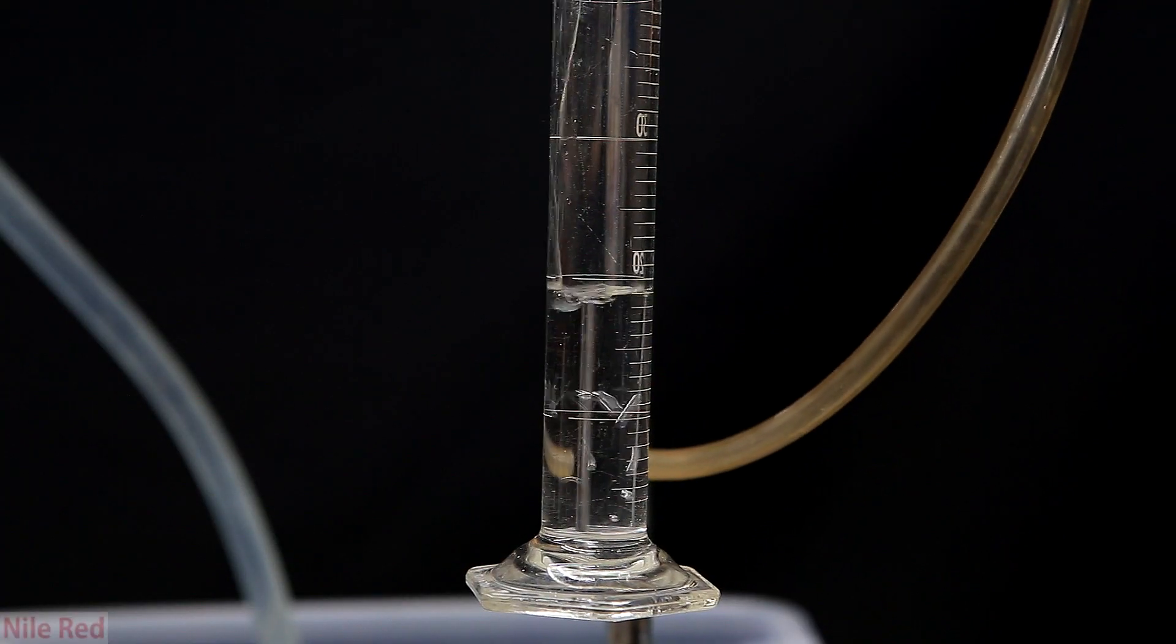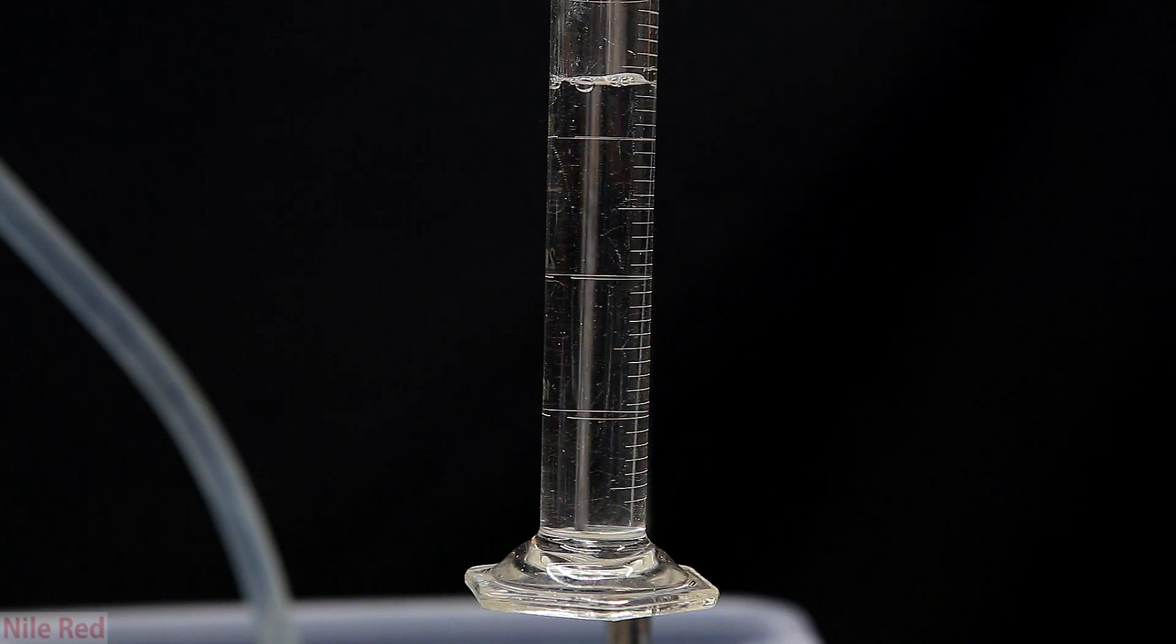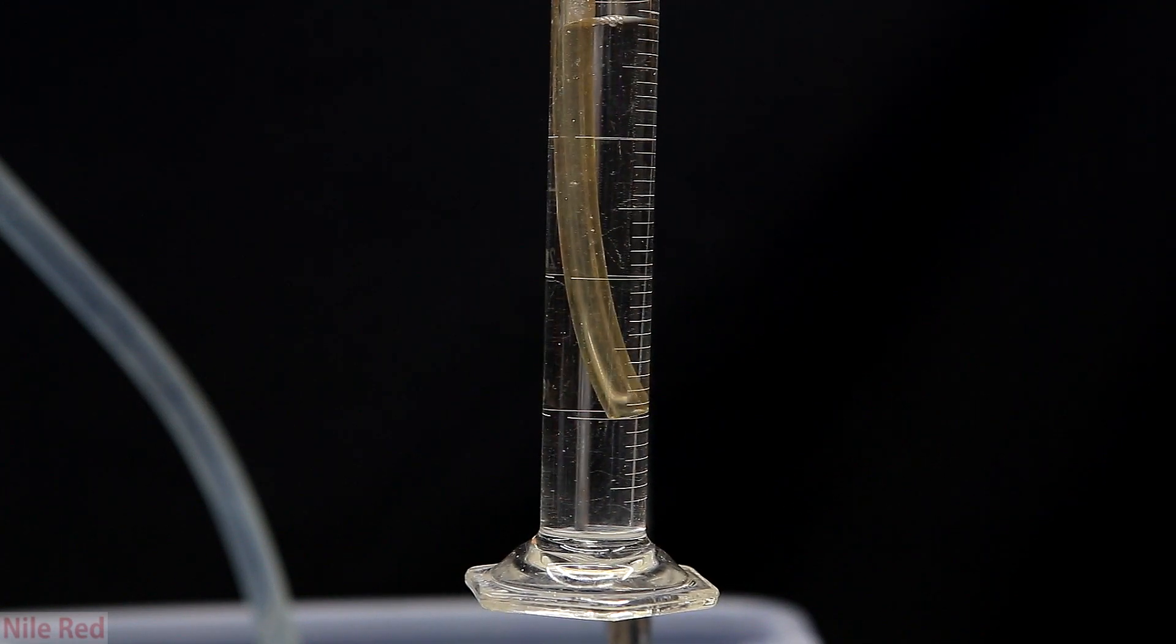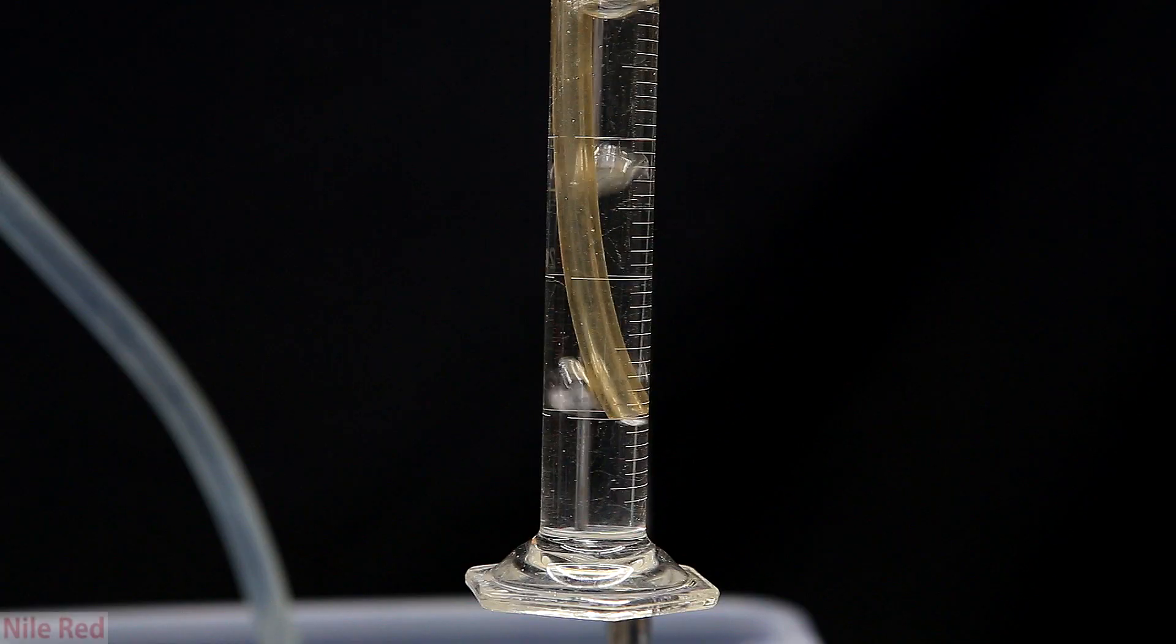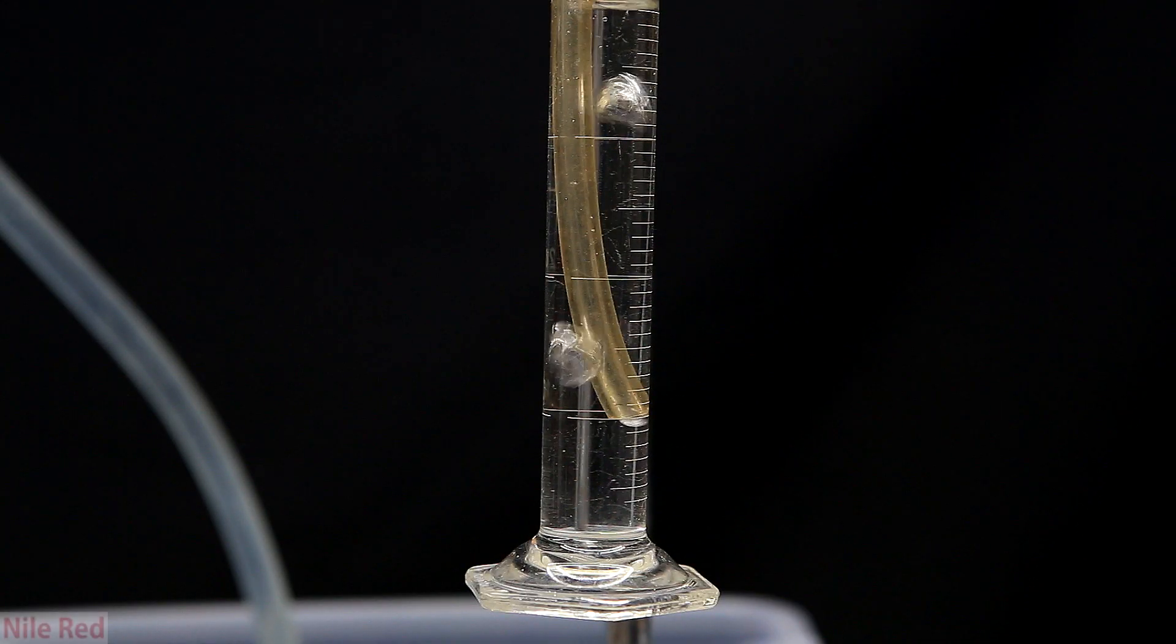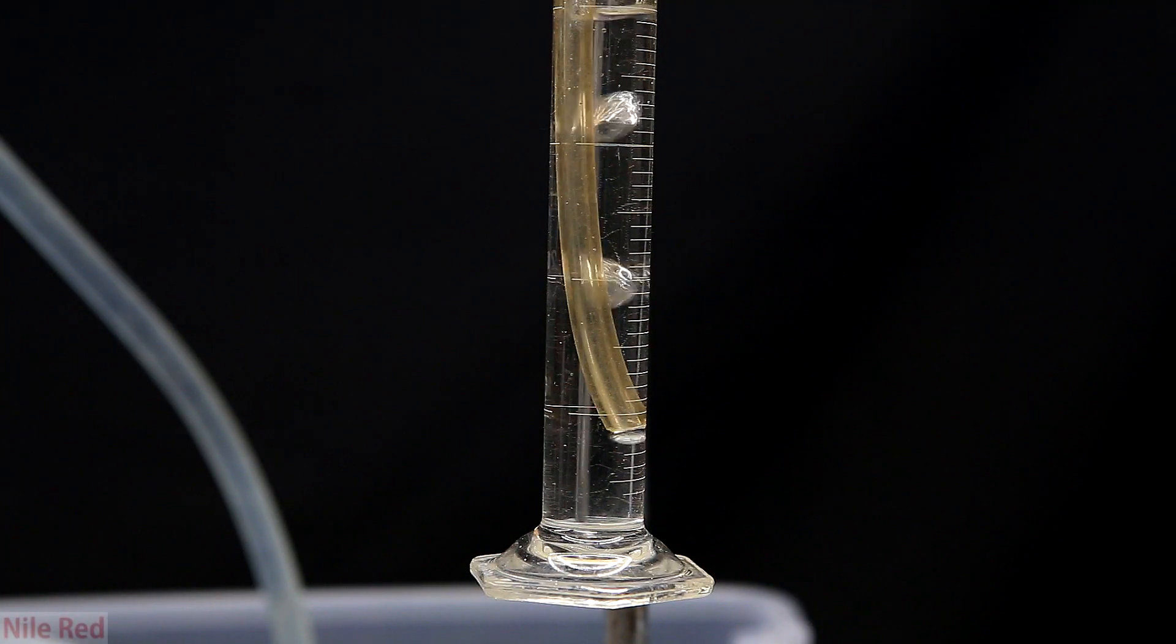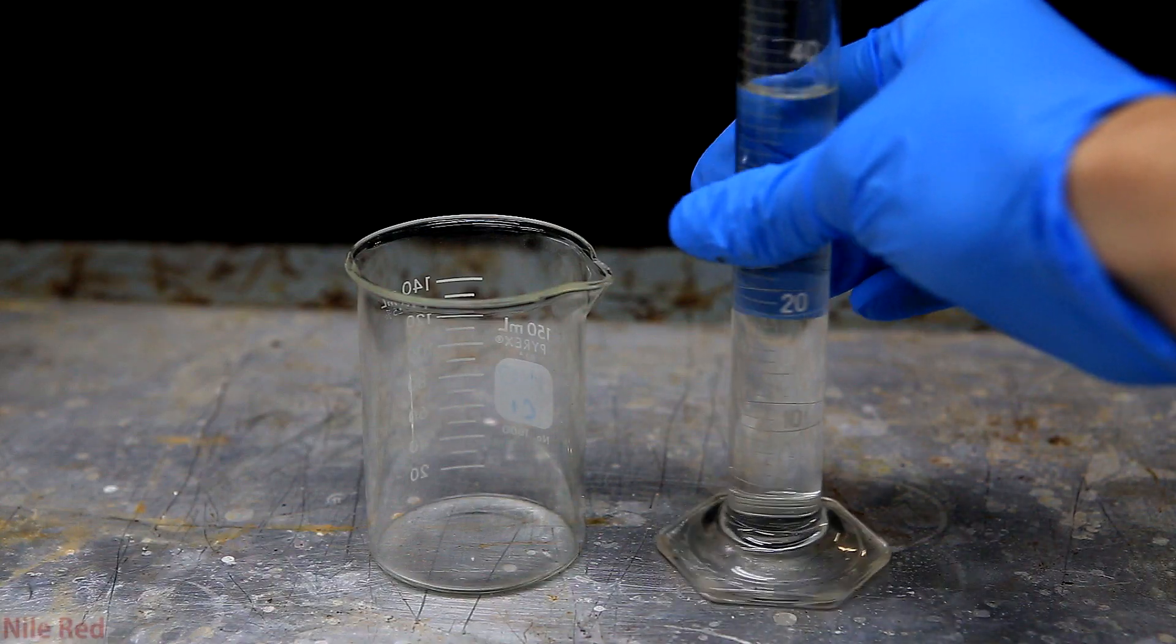So then to start catching some of the ammonia gas, we fill the graduated cylinder with some water and put the tube inside. At this point, I haven't added any water to the reaction, so you can see that it does produce quite a bit of gas even when mixed dry. As the concentration of ammonia in the water increases, the solution will get hotter.